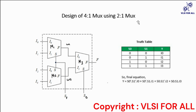For designing an Nx1 multiplexer, we require N-1 number of 2x1 multiplexers. Here we are designing a 4x1 multiplexer, so we require 4-1, that is, 3 two-to-one multiplexers.